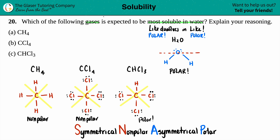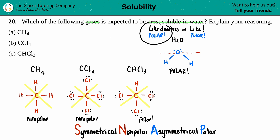So which of the following gases is expected to be the most soluble in water? Like goes with like, polar goes with polar - it is CHCl3. Final answer. We got it 100% correct.